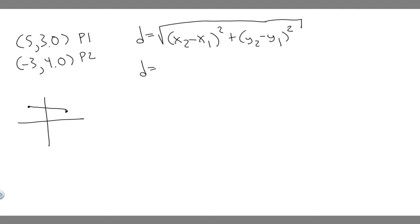So if we just start plugging in, D equals the square root of x2, which is -3, minus x on point 1, which is 5, squared, plus y2, which is the y-coordinate on point 2, which is 4, minus the y-coordinate on point 1, which is 3, and then we square it.